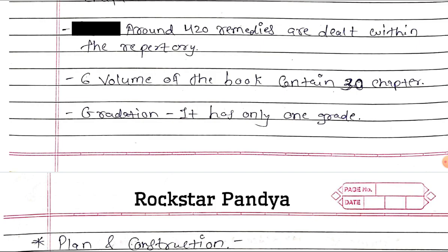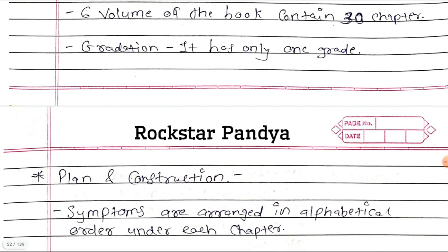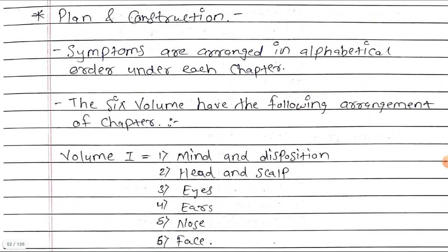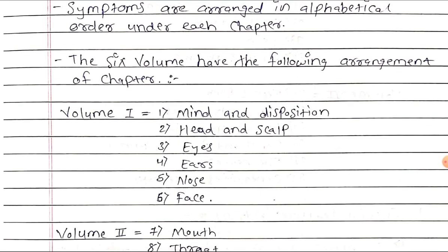Gradations: it has only one grade. Plan and construction: symptoms are arranged in alphabetical order under each chapter. The six volumes have the following arrangement of chapters.